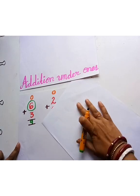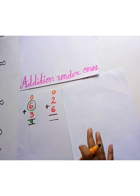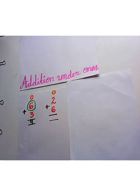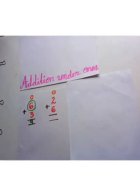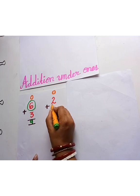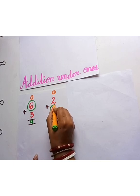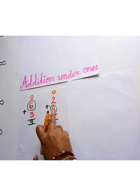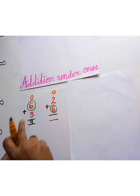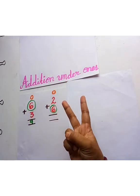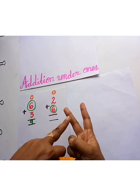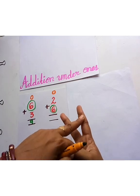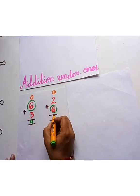Next. Now tell me children, which one is the biggest number? Yes, 6. So we will keep 6 in mind and then use 2 fingers: 6, 7, 8. So the answer will be 8.